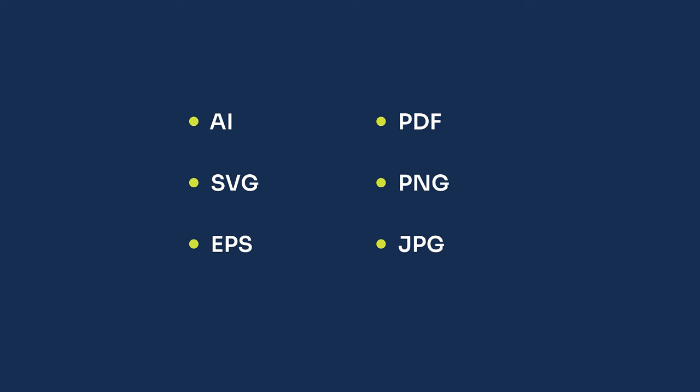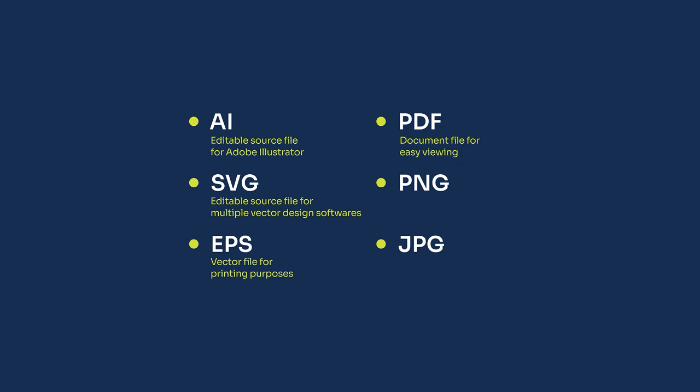Now I will guide you on how to prepare final files for the client. We will save the final files in these formats: AI is an editable source file that can only be used in Adobe Illustrator. SVG is also an editable source file that can be edited in multiple softwares like Adobe Illustrator, Inkscape, CorelDRAW, and Affinity Designer. EPS is a vector file mostly used for printing purposes. PDF is a document file that can be opened on personal computers and smartphones using any PDF reader. PNG is a transparent image format. And JPG is an image format with a solid background.